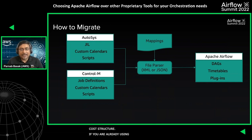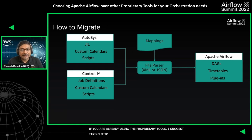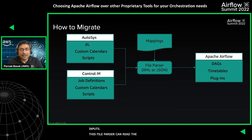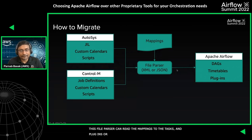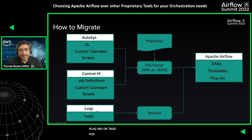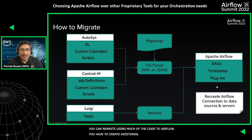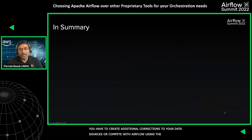If you're already using proprietary tools, here is a suggested migration path. Check your Autosys and Control-M components and create a file parser that takes the job definition files as input and converts them to DAGs. This parser can read mappings from an external module to convert constructs to appropriate Airflow tasks, schedules, timetables, plugins, or DAGs. For Luigi, since the definition is already in Python, you can rewrite by reusing much of the code in Airflow. You will also need to create additional connections to your data sources, file stores, or compute servers in Airflow using the UI, API, or CLI.